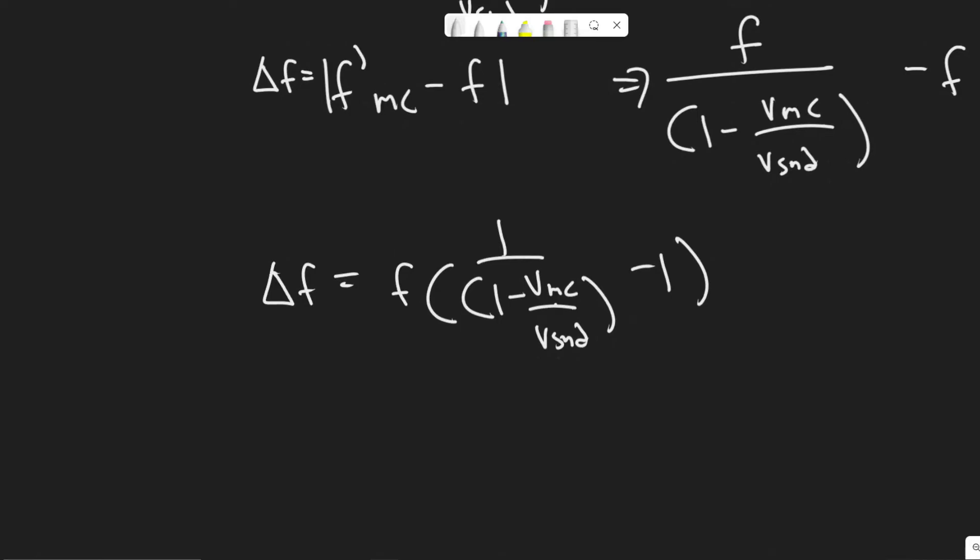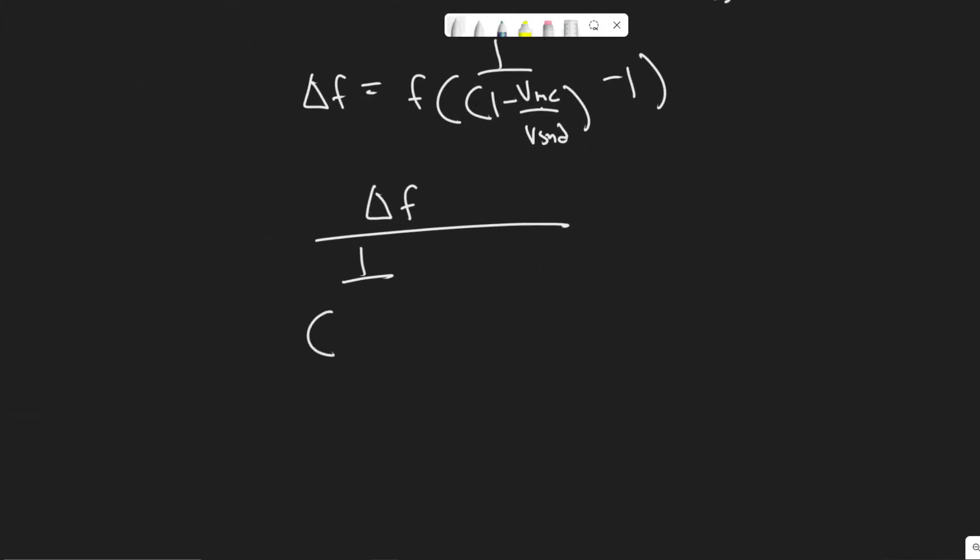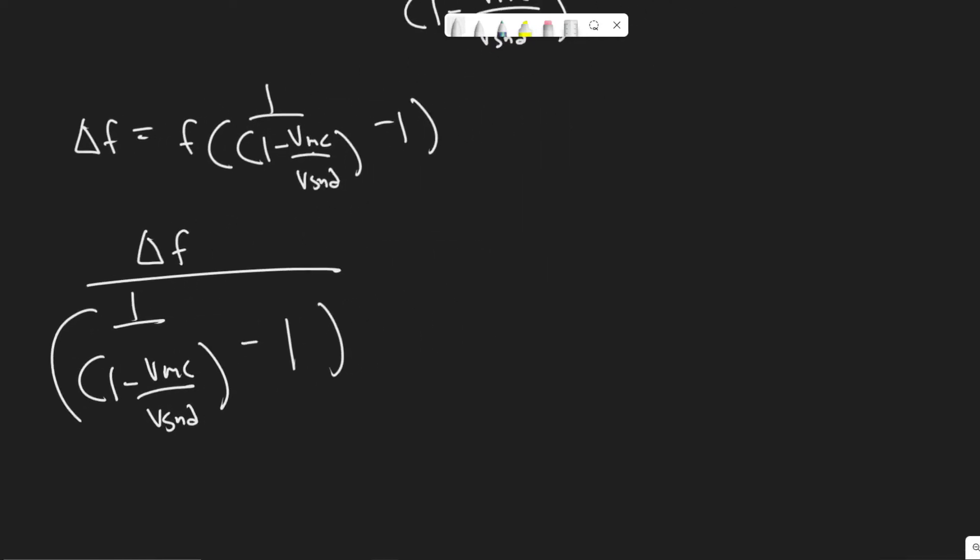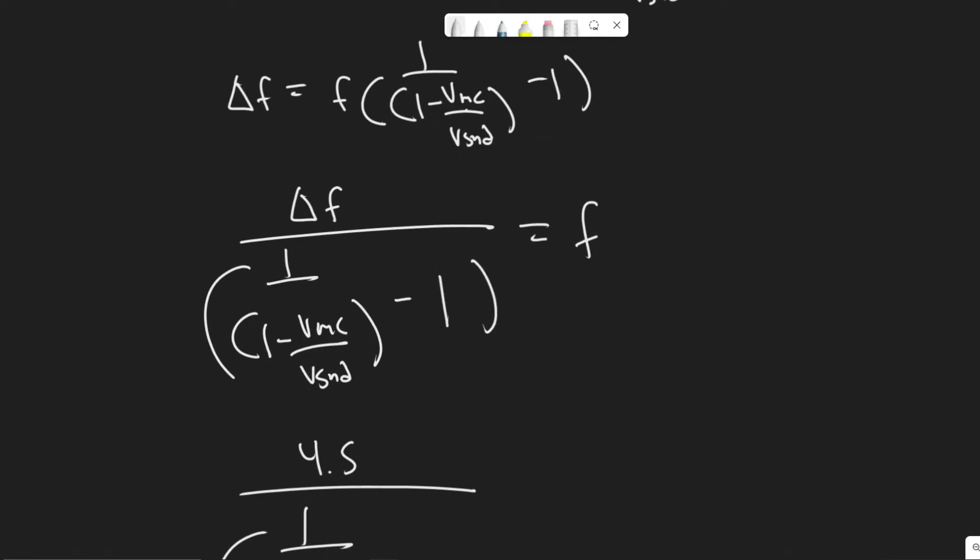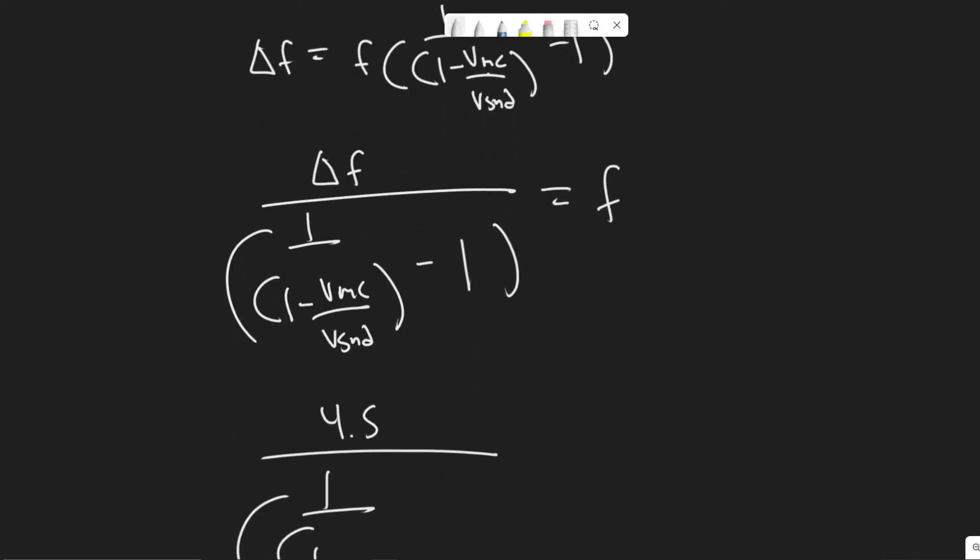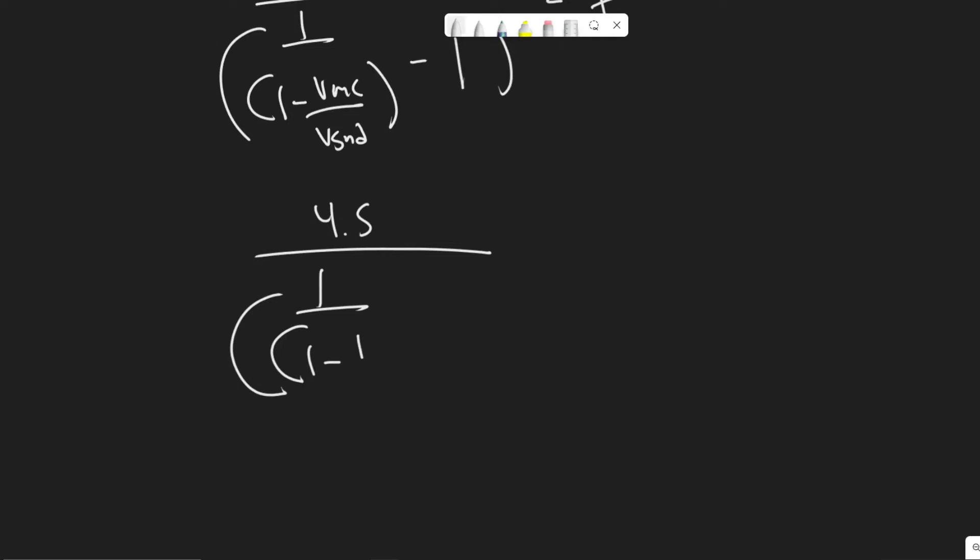So what we can do now is divide both sides. So you have delta F divided by one over one minus VMC over V sound minus one. And it's really just a matter of plugging it in now. So this equals F. So your delta F or the beat frequency is 4.5 dividing by one over one minus the velocity of the moving car we said was 15 meters per second. The velocity of sound is 343.